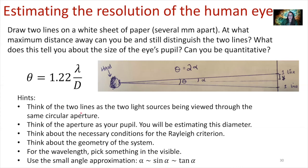We're going to think about those two lines on the wall as light sources being viewed through the circular aperture of our eyeballs. Big D is the diameter of our pupil — that's what we're trying to estimate. Think about our necessary conditions for the Rayleigh criterion: those two objects are going to be separated by just the right angle equal to 1.22 wavelength over big D. You can pick any wavelength in the visible part of the electromagnetic spectrum for lambda — red, green, purple, whatever you choose.